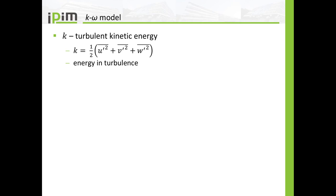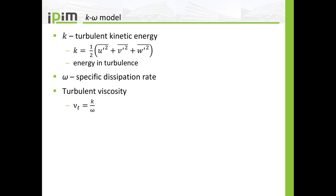In the k-omega model, you introduce two quantities like in the k-epsilon model. The first is again the turbulent kinetic energy, but here you introduce another quantity omega, which is the specific dissipation rate. The turbulent viscosity is calculated as k divided by omega. There are also transport equations for k and one for omega.